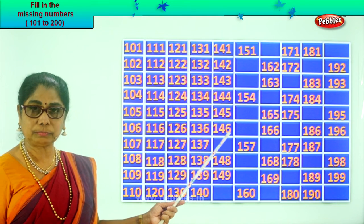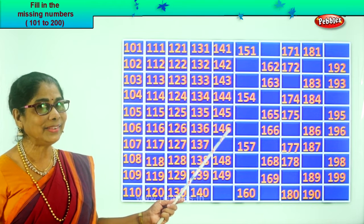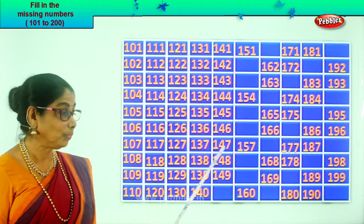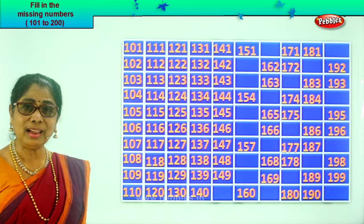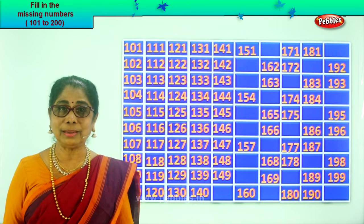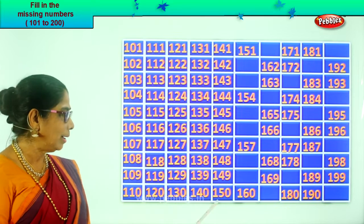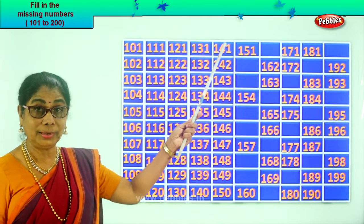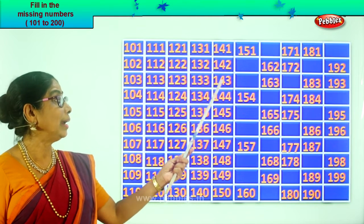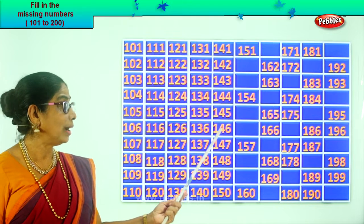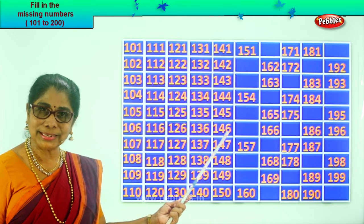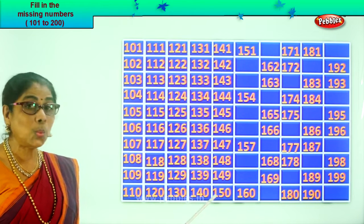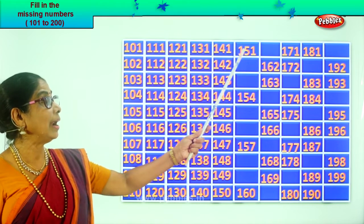145, 146. After 6, 7. After 46, 47. We write it as 147. 148, 149. After 49, what number? After 49, 50. So we write down 150. Now let's read 141 to 150: 141, 142, 143, 144, 145, 146, 147, 148, 149, 150.